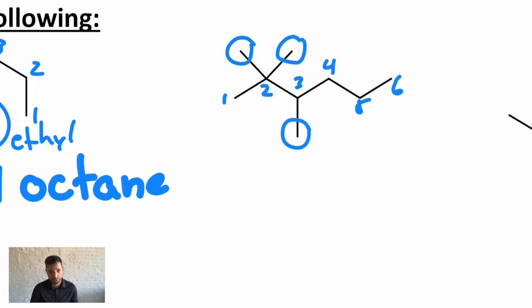Notice that you don't combine them and make it a propyl. A propyl would be a three-carbon chain coming off of this somewhere, but that's a one-carbon chain, a second one-carbon chain, and a third one-carbon chain. So we have three methyls, which means this is a trimethyl hexane.